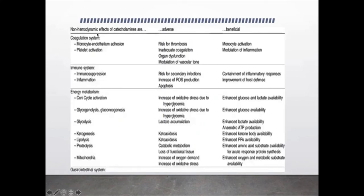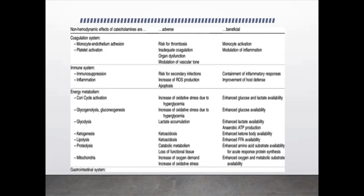There are also non-hemodynamic effects of catecholamines, such as monocyte activation and modulation of inflammation. It helps contain the inflammatory response so it does not spread systemically, because systemic inflammation can be harmful to the body. It also activates the Cori cycle, increases glycogenolysis, gluconeogenesis, glycolysis, ketogenesis, lipolysis, proteolysis, and in mitochondria enhances oxygen and metabolic substrate availability.